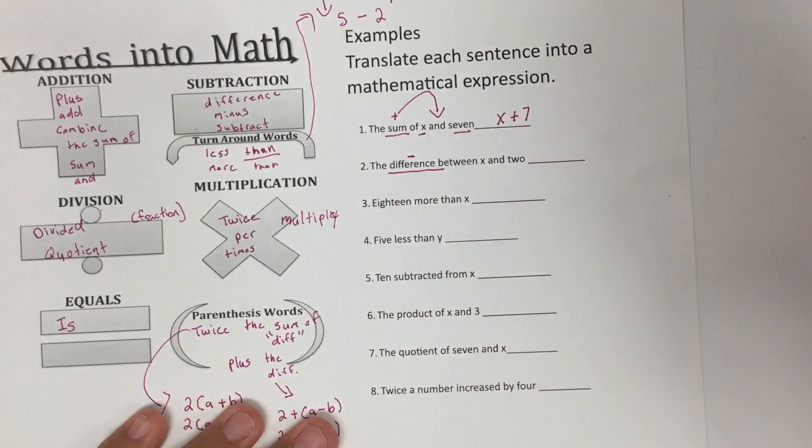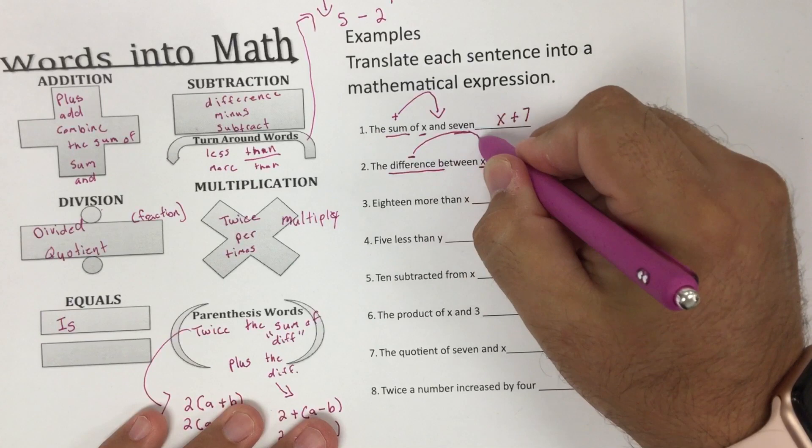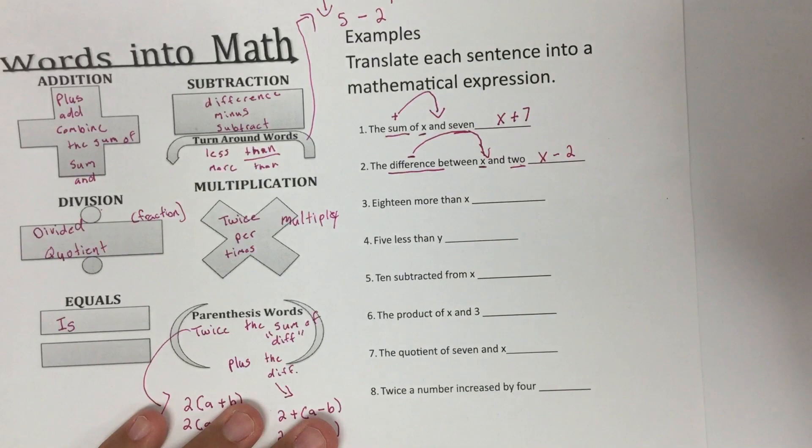The difference. Difference means to subtract. The difference between X and two. So the difference goes with the word and. So that's going to be X minus two.